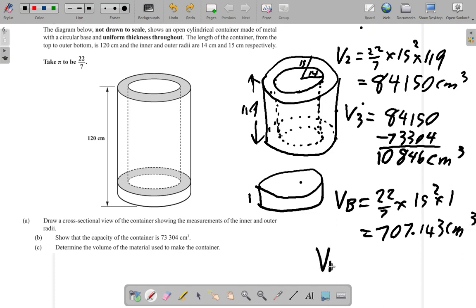Now the volume of the material you're going to add these two. So 10,846 plus 707.143 cm. When you add them I get 11,553 point call it 14 cm cube. Is that what you got? Alright.